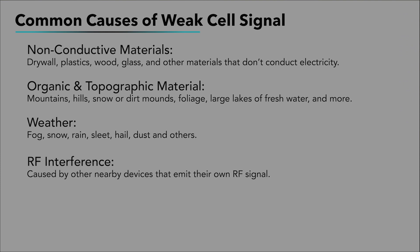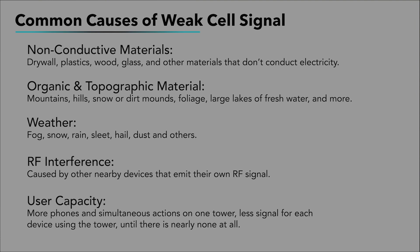RF interference caused by other devices that emit their own RF signal can disrupt your signal, but usually won't completely block a strong signal. User capacity is not infinite on cell towers, and as more phones simultaneously send and receive signals using the same tower, the amount of power the tower can provide to each user lessens until there is nearly none at all.